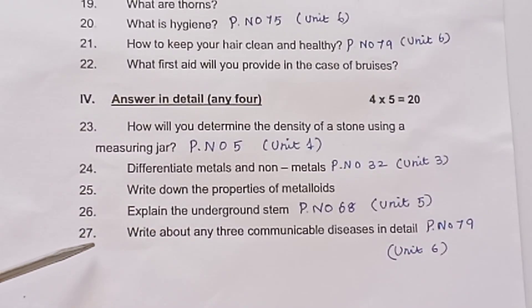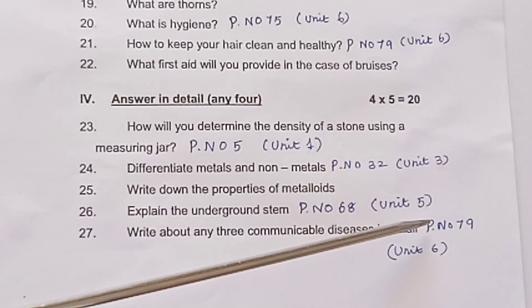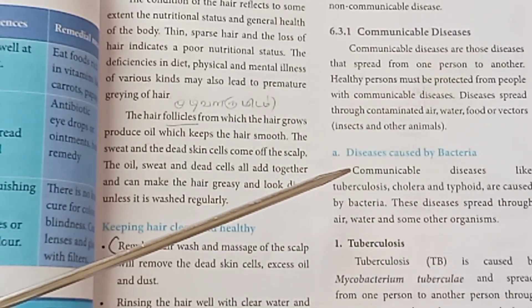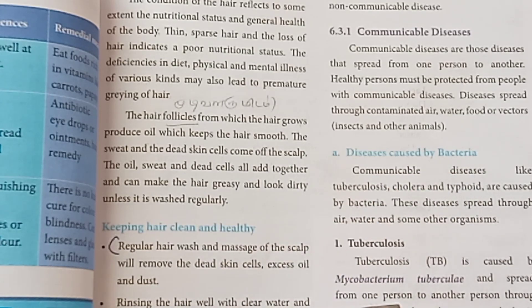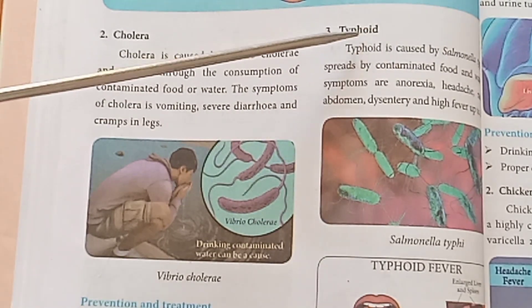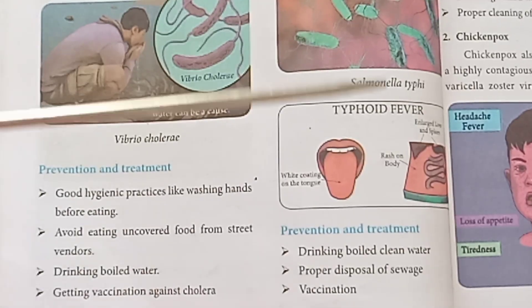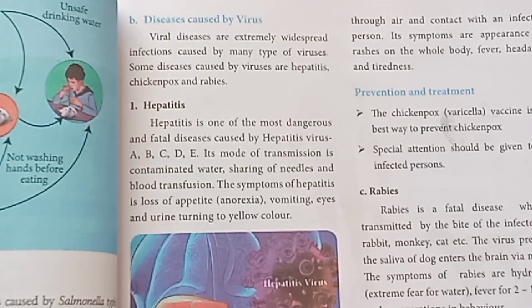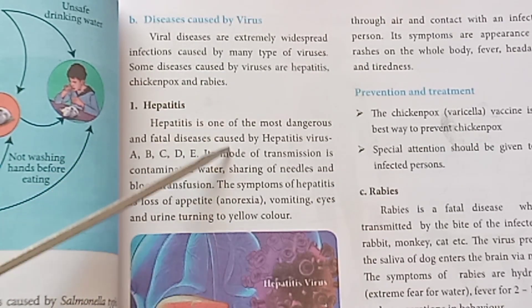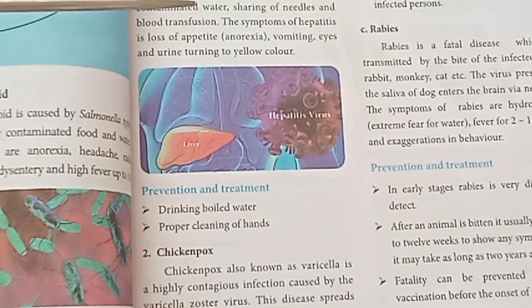Question 27: Write about any 3 communicable diseases in detail. Page number 79, Unit 6. Answer: Note any 3 communicable diseases. Diseases caused by bacteria — refer to page 79 for causes, prevention, and treatment. Typhoid: causes, prevention, and treatment as given on page 80. Diseases caused by virus — Hepatitis: how it is spread, its causes, prevention, and treatment. All the best.